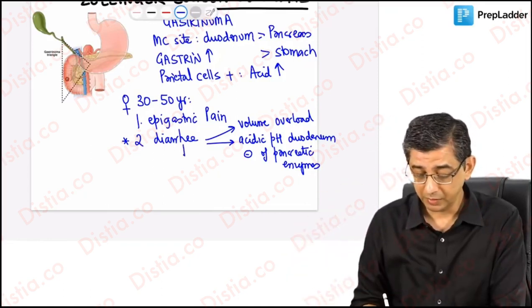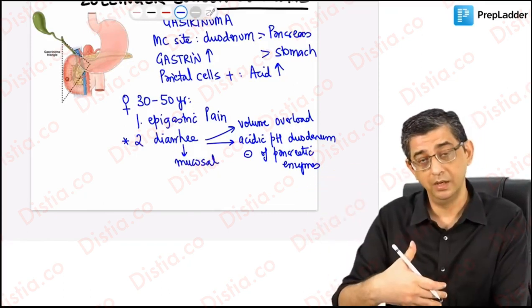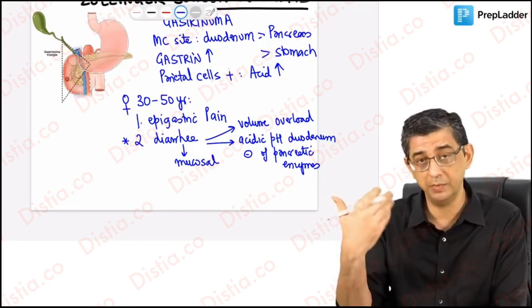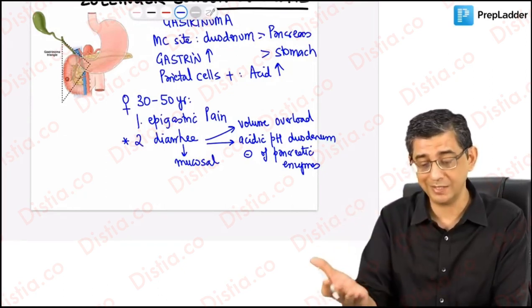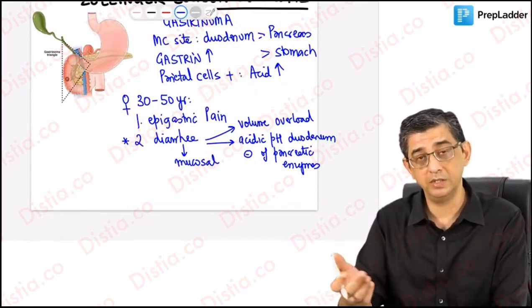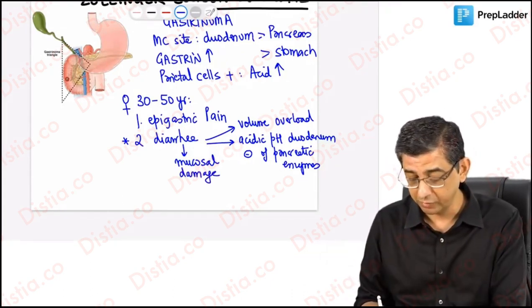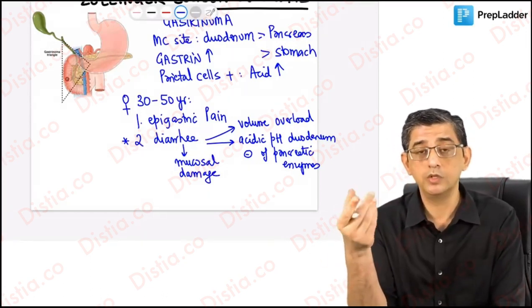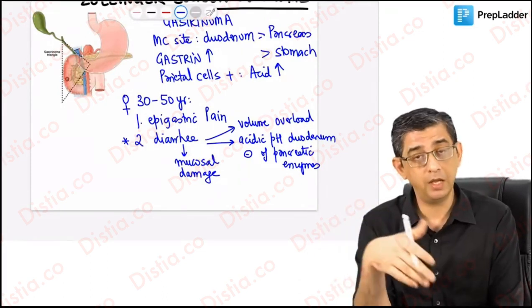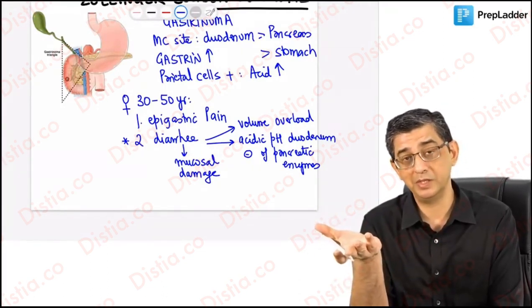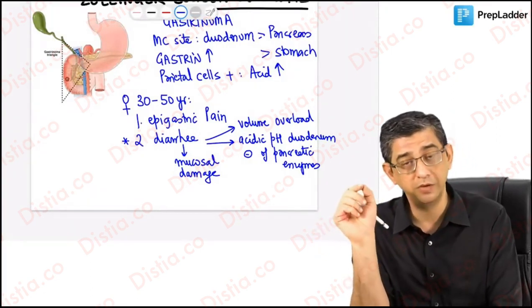The third reason that can explain the diarrhea component is direct mucosal damage. The small intestine is having acid coming in. This influx of acid from the stomach in large amounts will cause direct mucosal damage to the small intestine, and therefore symptoms akin to osmotic diarrhea can develop. Once the person stops eating, the diarrhea might improve because osmotic diarrhea is always characterized by this presentation.